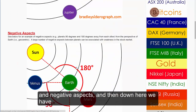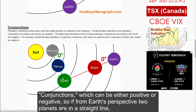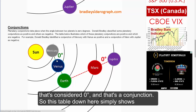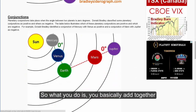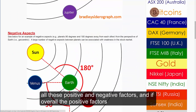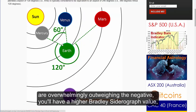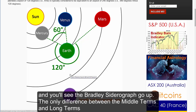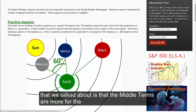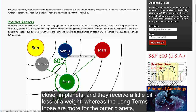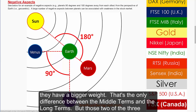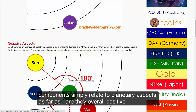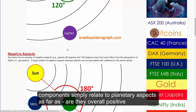There are also conjunctions, which can be either positive or negative. If from Earth's perspective two planets are in a straight line, it's considered zero degrees, and that's a conjunction. A table shows when it is a positive versus a negative conjunction. You basically add together all of these positive and negative factors, and if overall the positive factors are overwhelmingly outweighing the negative, you'll have a higher Bradley Siderograph value. The only difference between middle terms and long terms is that middle terms cover the closer inner planets and receive a little less weight, whereas long terms cover the outer planets such as Jupiter — which is much larger and takes longer to go around the sun — so outer planets have a bigger weight.